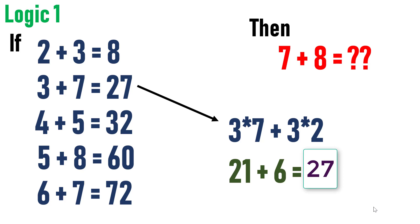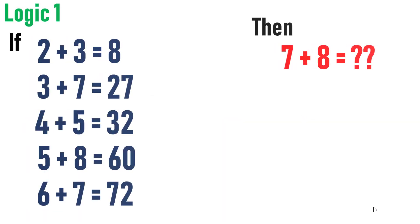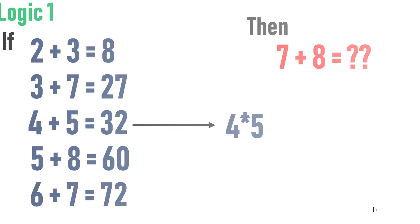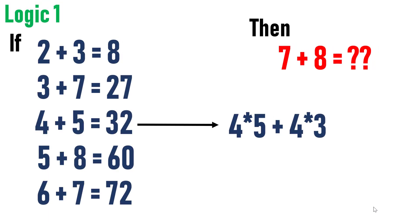Let's check the next equation and check whether this logic holds good. Let's multiply the 2 number 4 into 5, which is 20 plus 4 into 3, which is 12. Adding both will yield 32, which is again the intended solution. And this logic is actually working and we have tested for two equations already.